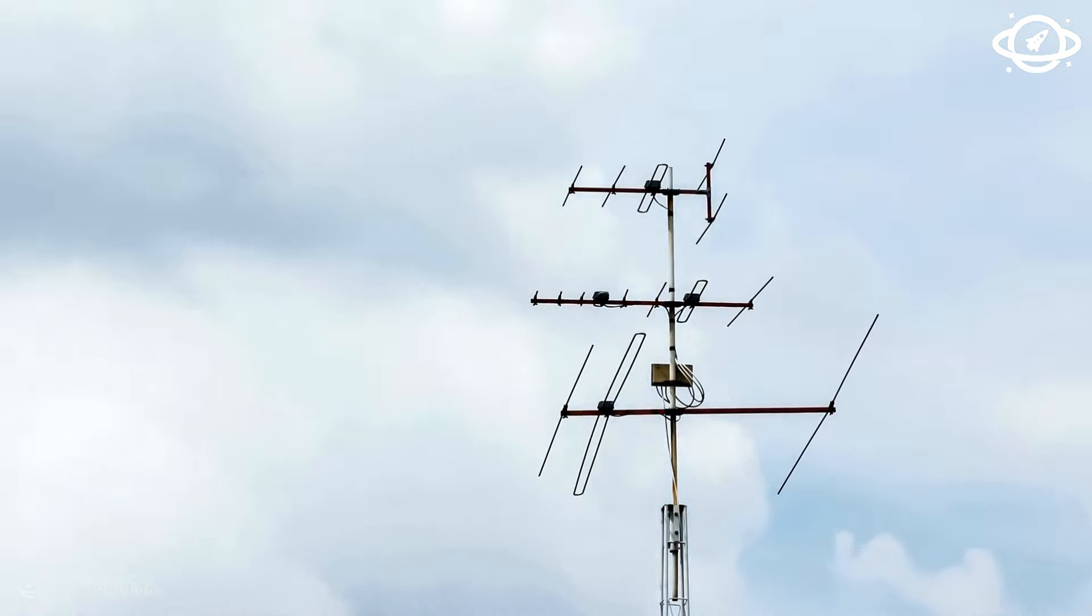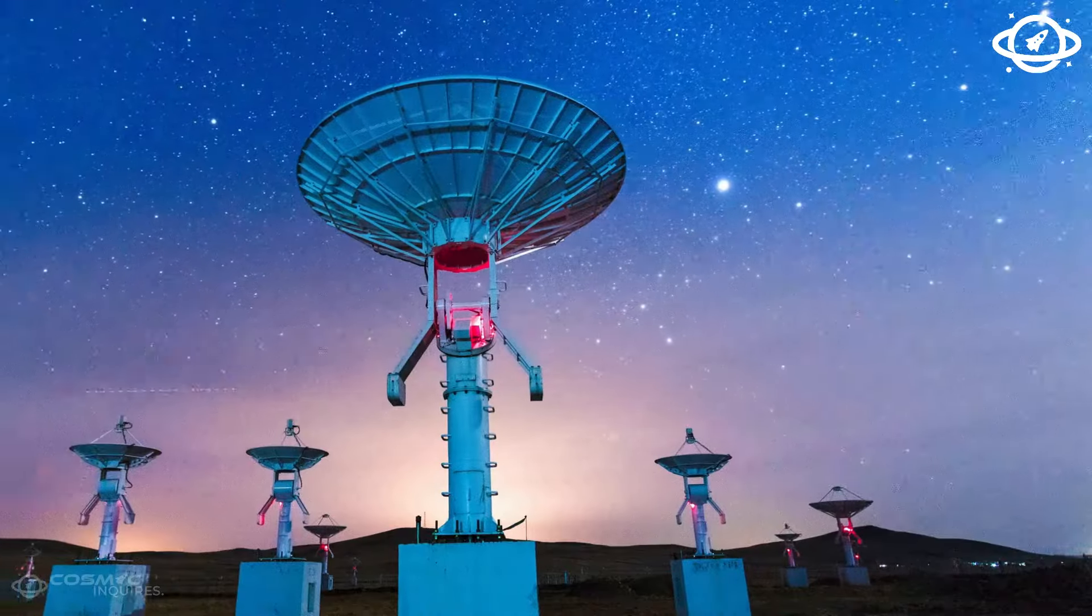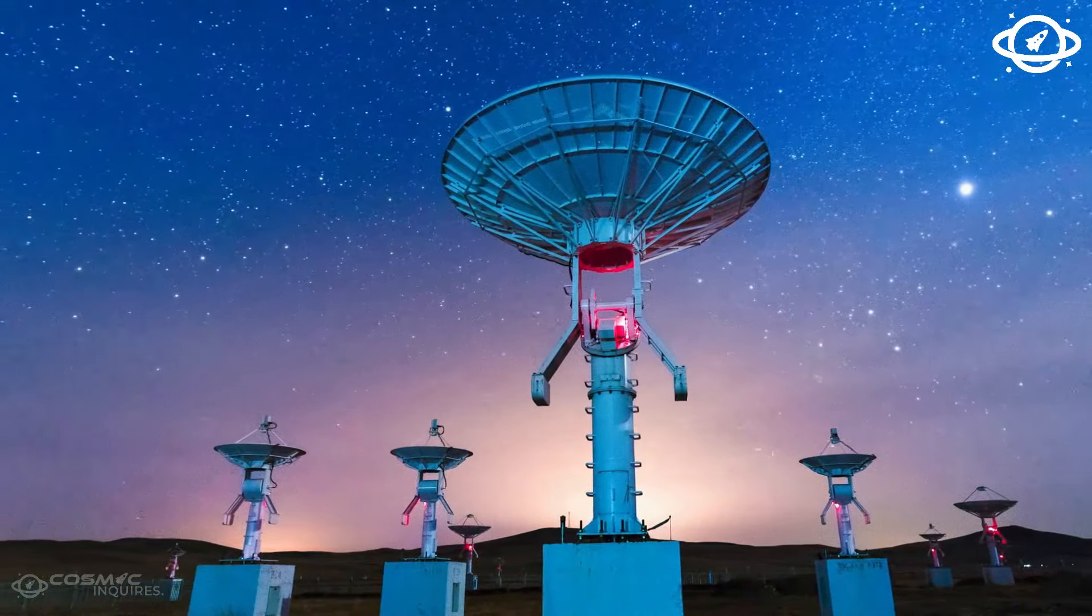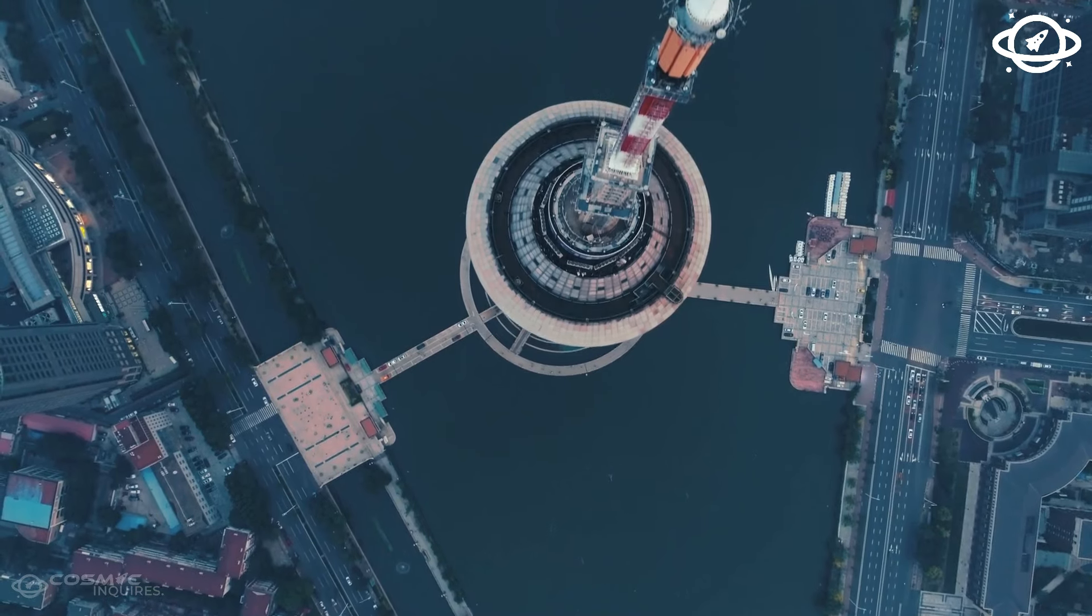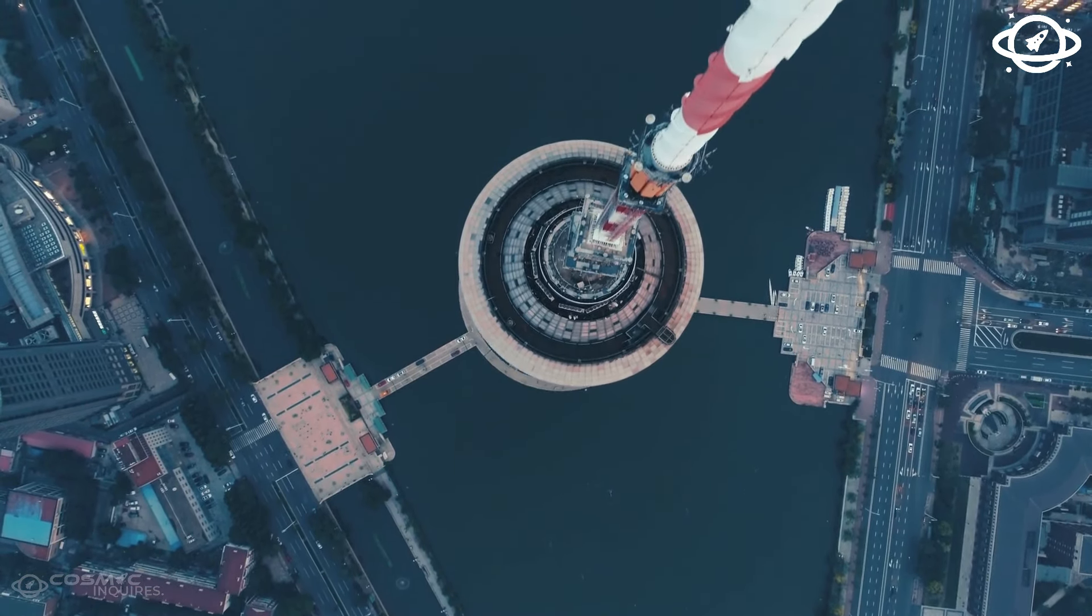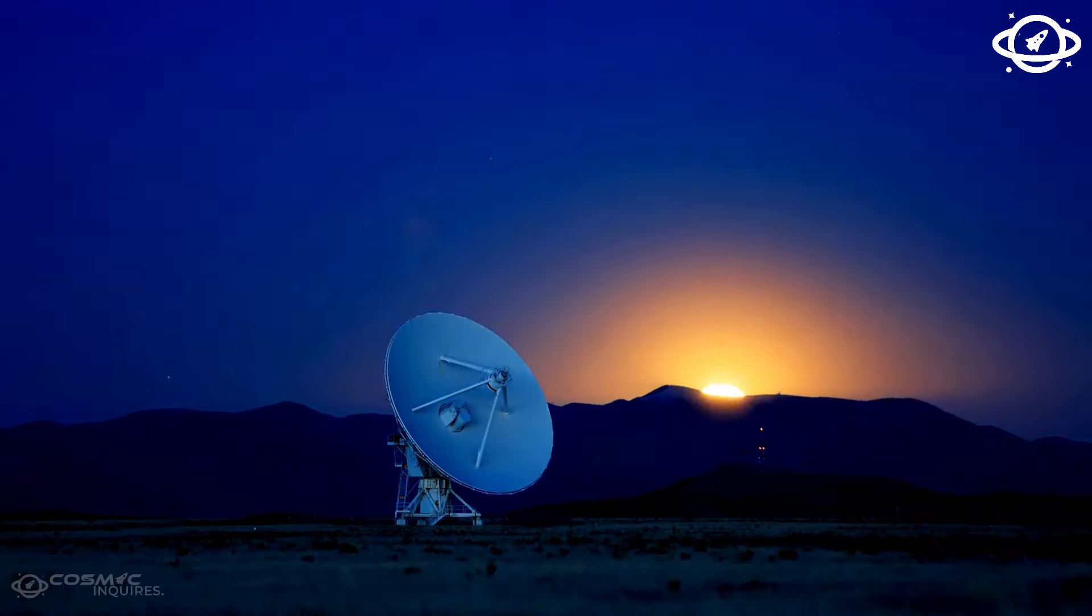The DSN is a collection of large radio antennas strategically placed around the Earth, such as in California, Spain, and Australia, to ensure continuous communication with different spacecraft as the planet rotates.